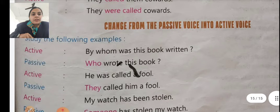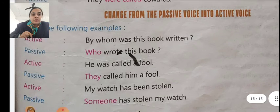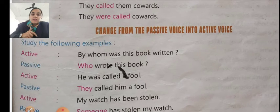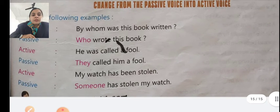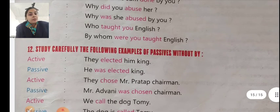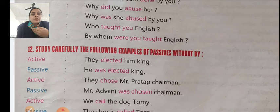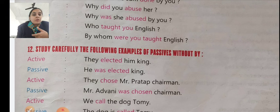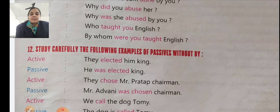Lastly, we will see change from passive voice to active voice — passive voice can also be changed back to active voice. Example: 'By whom was this book written?' Active: 'Who wrote this book?' Another: 'He was called a fool.' Active: 'They called him a fool.' 'My watch has been stolen.' Active: 'Someone has stolen my watch.' That's all for this chapter. Read the sentences at least three to four times, practice, and you'll easily identify which verb form is used. Thank you so much for watching. Stay safe.